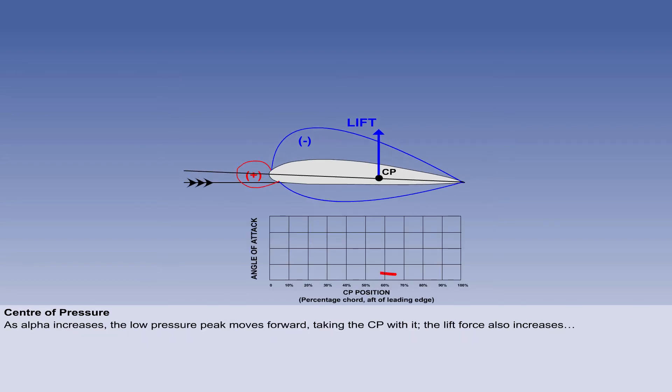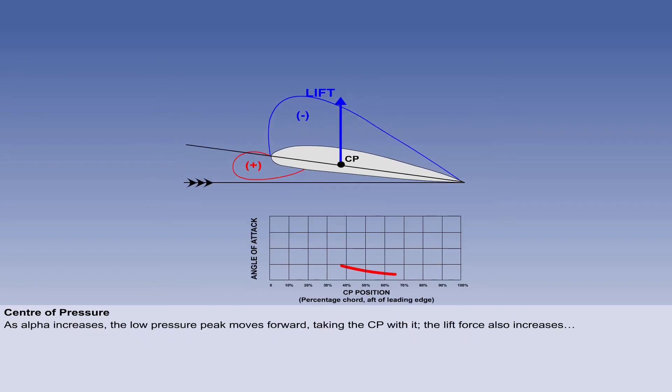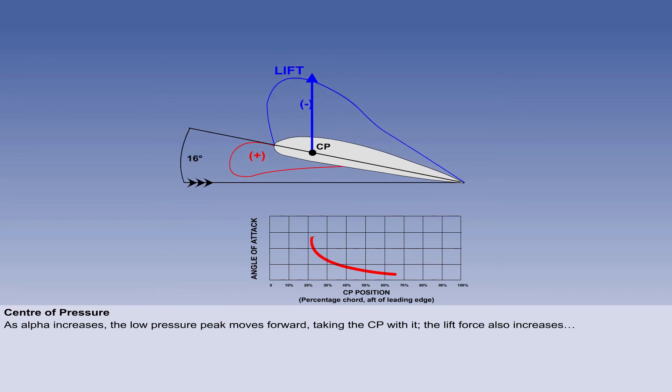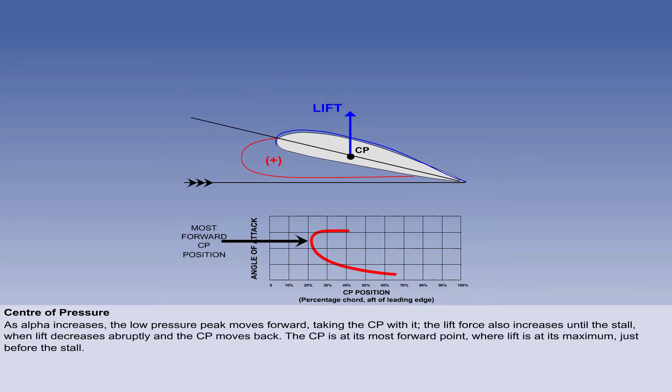As the alpha increases from 0 to 16 degrees, the upper peak of low pressure, or suction, will move forward, taking the point of concentration of lift, the CP, with it. The magnitude of the lift force also increases with alpha, until the stall is reached, at which point the lift force decreases abruptly, and the CP moves back along the chord. Note that the CP is at its most forward point, where lift is at its maximum, just before the stall.